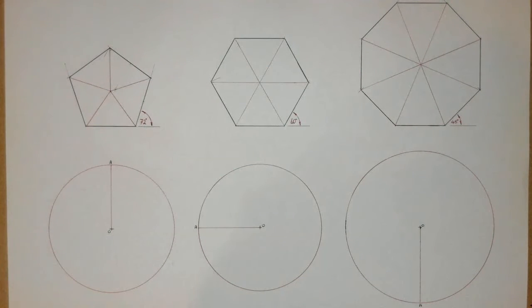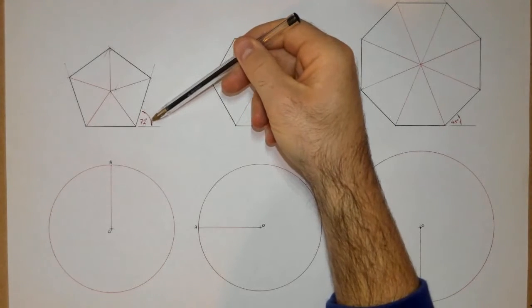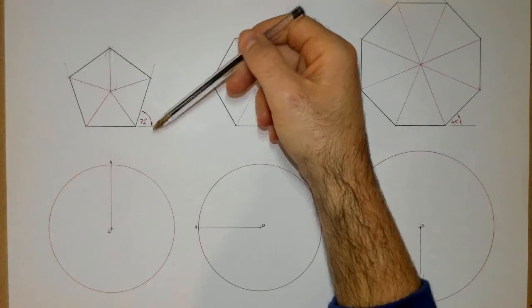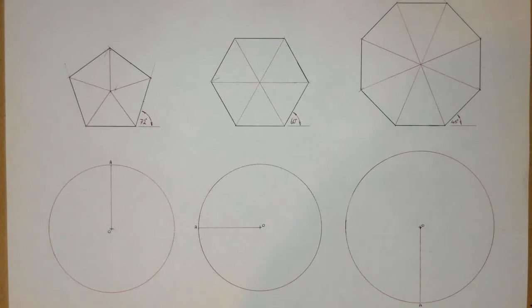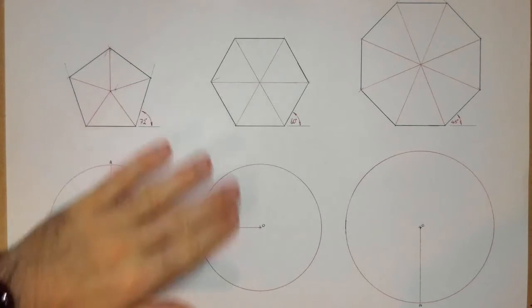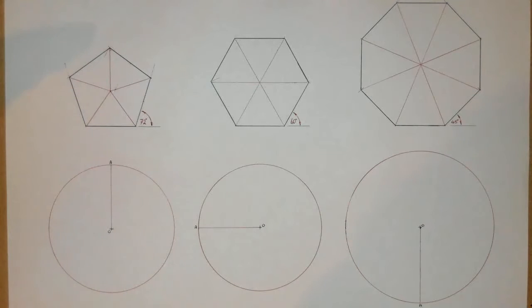We've previously learned in a previous video how to construct polygons when we're given the line length, and what we learned was how to construct them by using the exterior angle and using a protractor. Now today what we're actually going to be learning about is how to construct a pentagon inside of a circle, a hexagon inside of a circle, and an octagon inside of a circle. We're not given the line length, but we're going to use the angle to help us out.